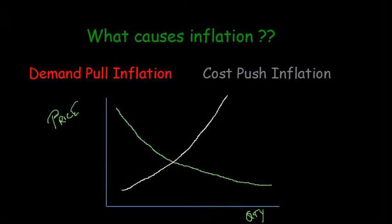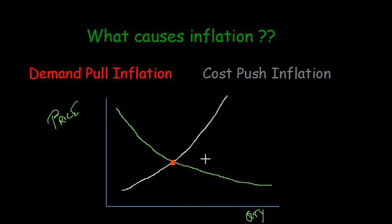We have a demand curve and a supply curve, and this point here is the equilibrium point, which is the equilibrium price for a certain good and service, or for the aggregate goods and services in the economy.